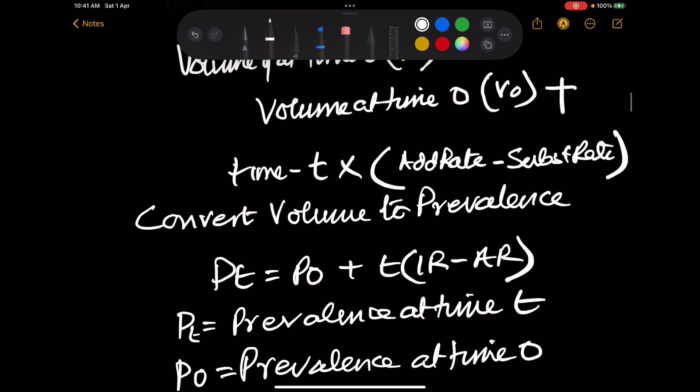Now convert the v into p. You will get prevalence at time t equals prevalence at time 0 plus time into incidence rate minus attrition rate.